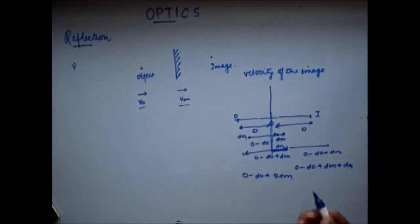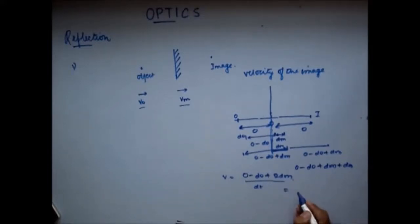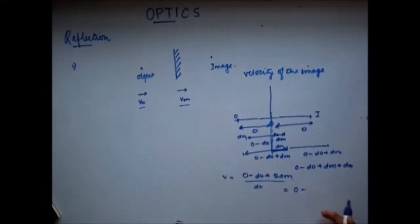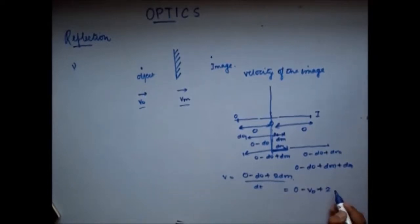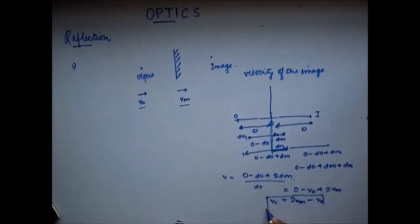This is the new position of the image. To find the velocity, I divide by the small time dt. This gives: the velocity of the image equals zero minus dO/dt plus 2 times dm/dt. dO/dt is the velocity of the object, and dm/dt is the velocity of the mirror. So the velocity of the image is 2 times the velocity of the mirror minus the velocity of the object.